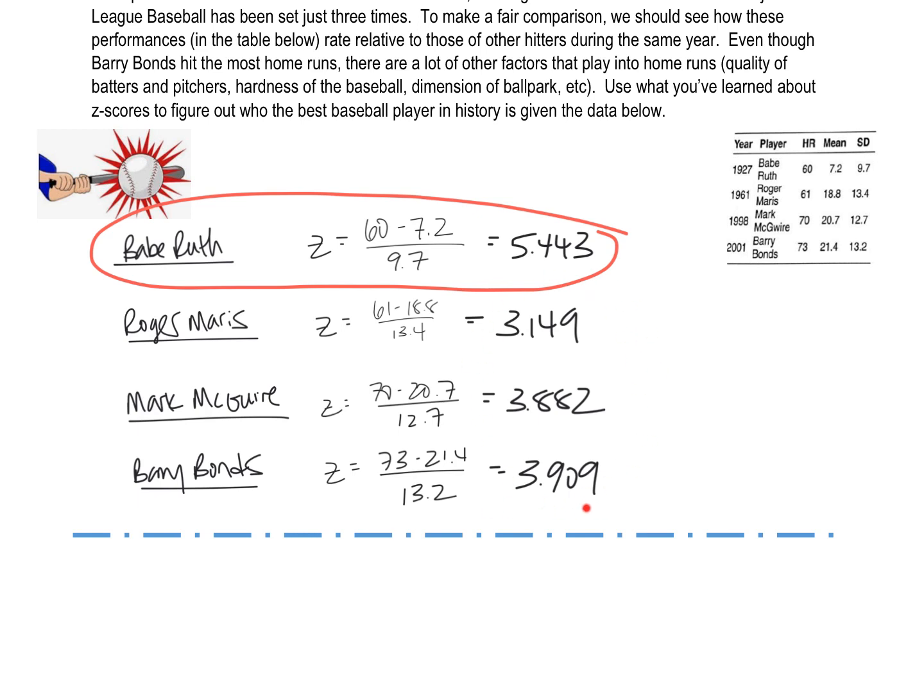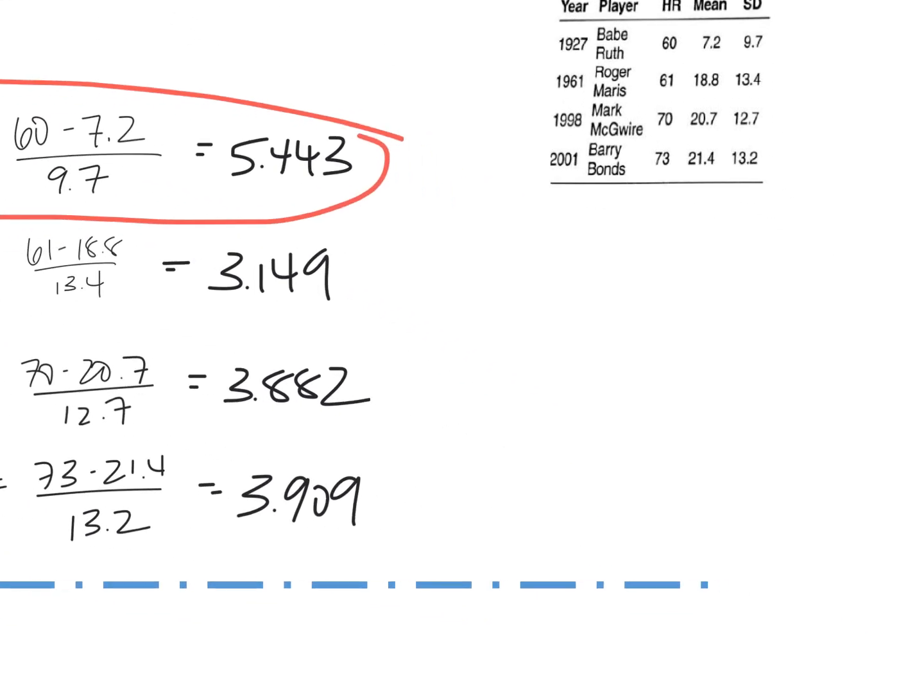So Barry Bonds is second place because he is really close to four standard deviations above average. Mark McGwire a little bit under that, and Roger Maris just over three. And so again, just to reiterate what these Z-scores mean,